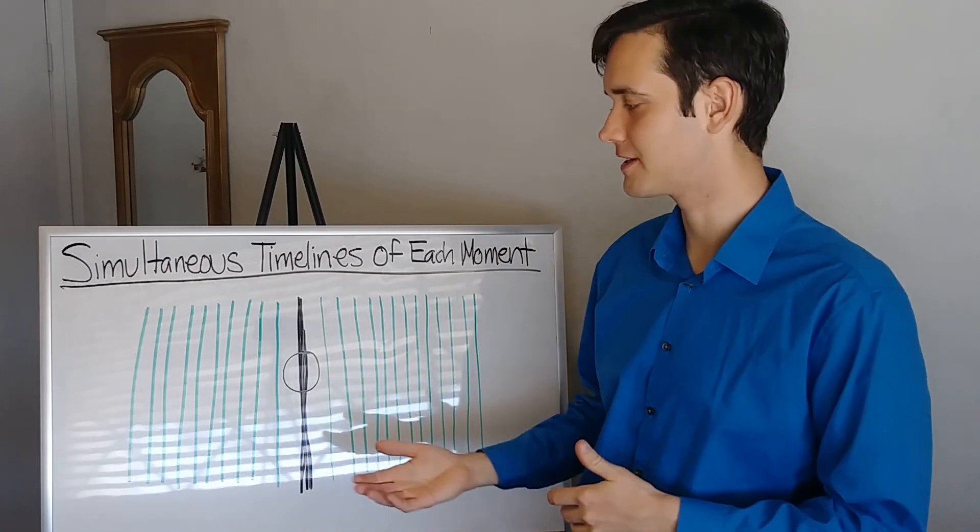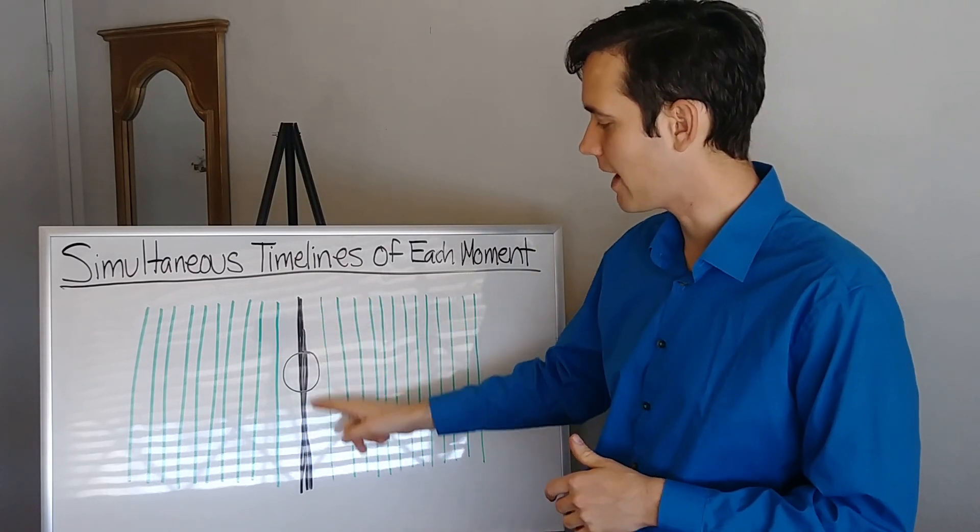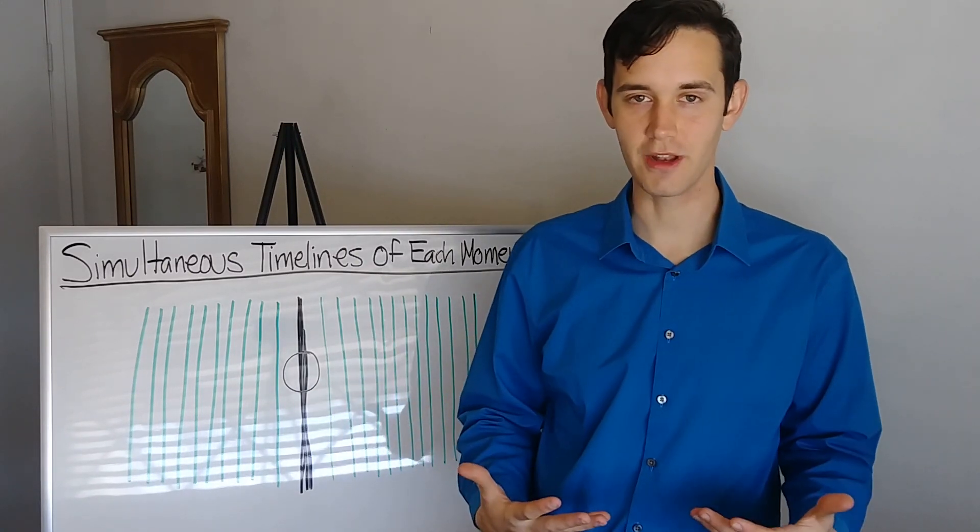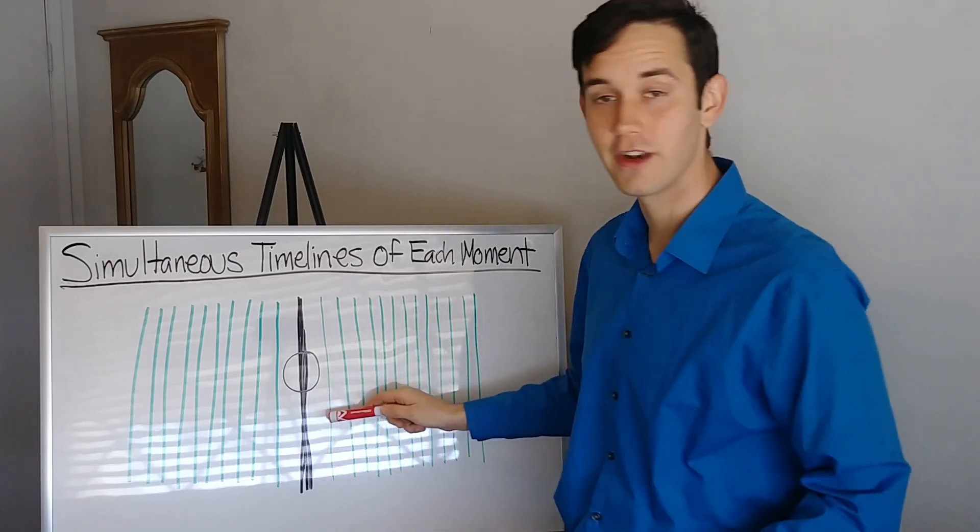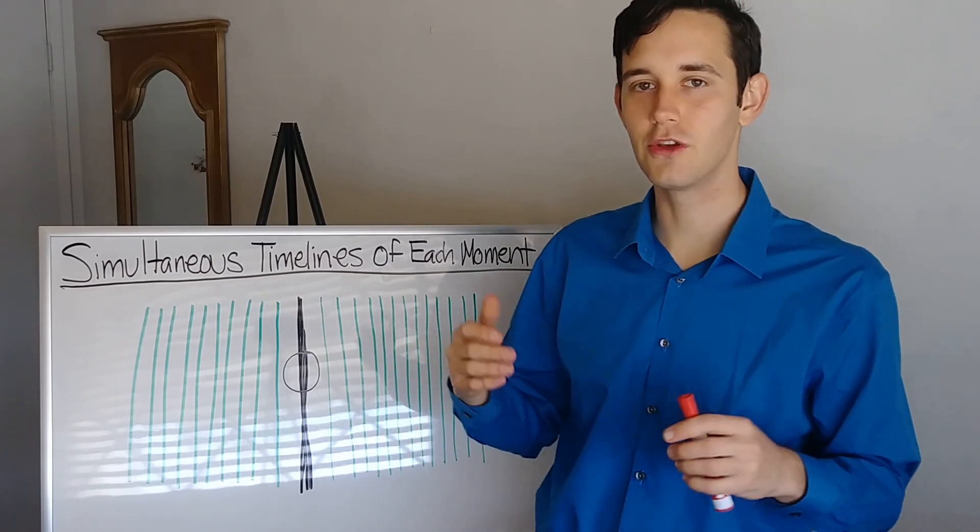So for this example, I just want to talk about how the center line here is the present moment, and it always is shifting into an alternate moment whenever you have a thought.